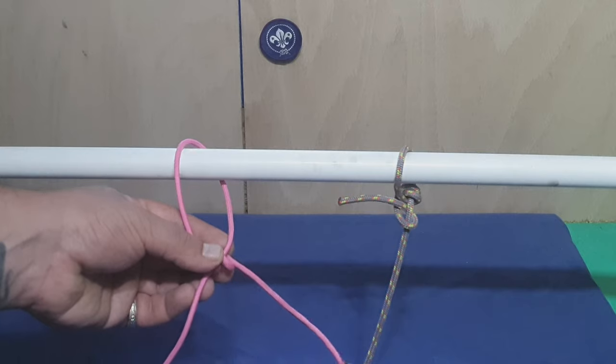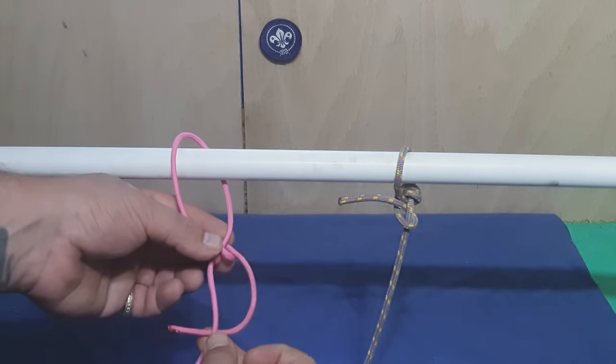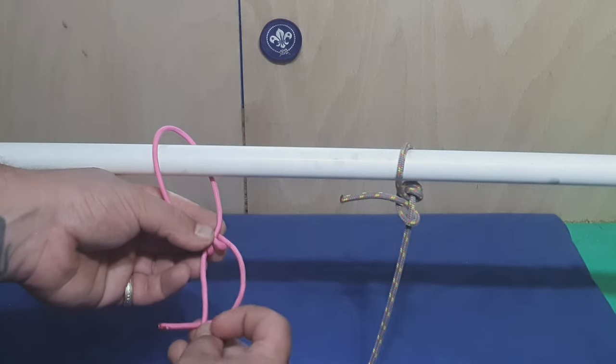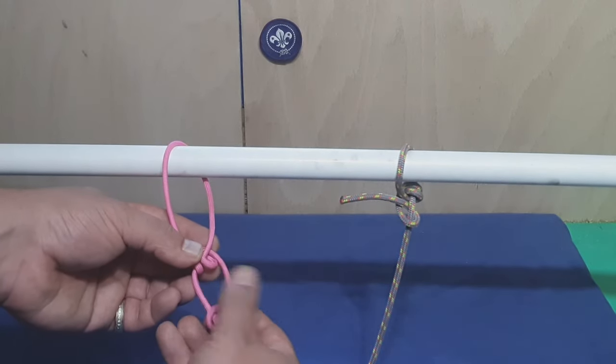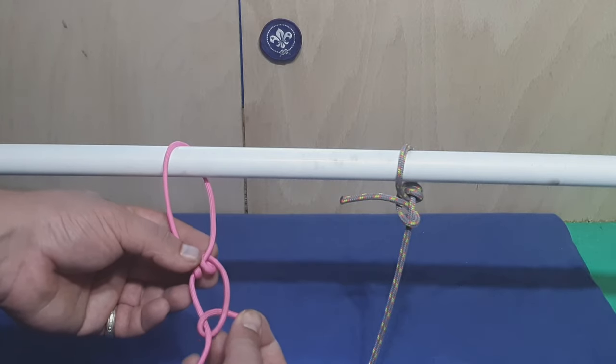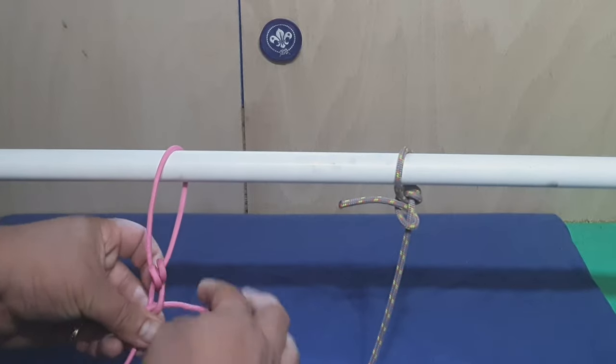Okay, then take your working end now and form a D by doing this, going around the back of your dead end and then coming back through the eye of the D, like so, and then just snug up to pull tight.